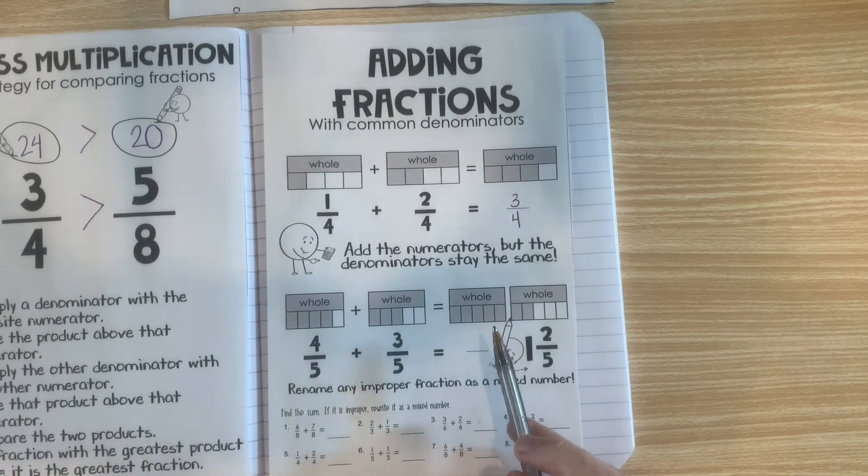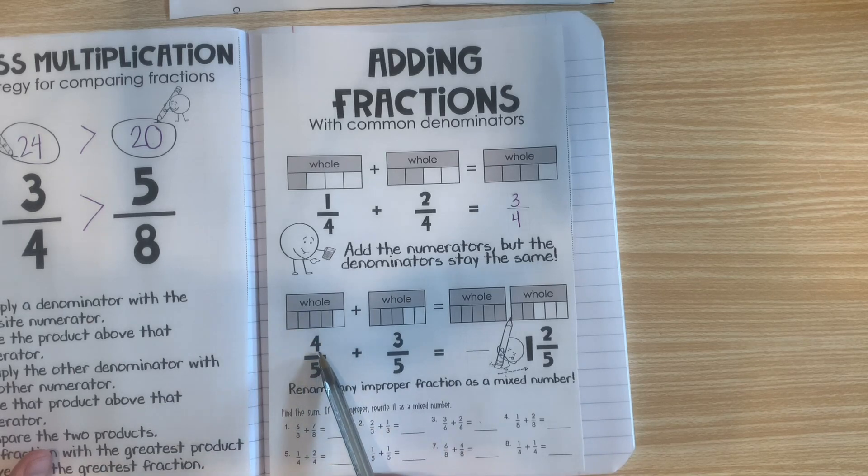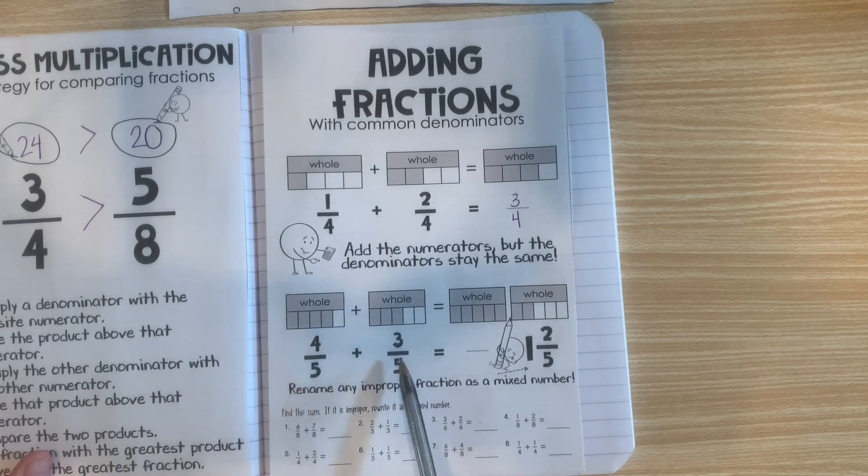Now let's look at another example. Here we have a fraction of 4 fifths, 4 out of the 5. And we're going to add on 3 fifths more, 3 out of the 5.